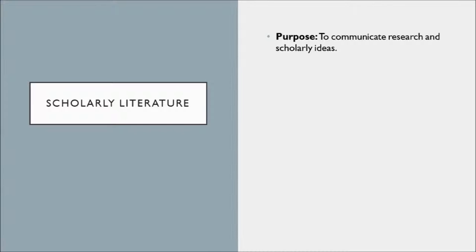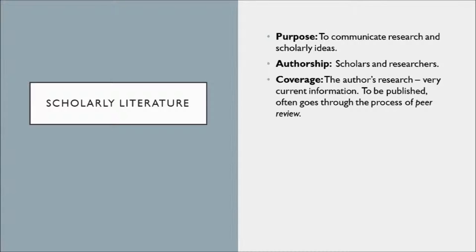Scholarly literature's main purpose is to communicate research and scholarly ideas. Authorship includes scholars and researchers who are experts in the field, reporting on their research and what they're working on — so this is very current information. Scholarly publications can go through peer review, where information is vetted by other researchers in that field before it is published in a journal. The audience is other scholars, researchers, and students.